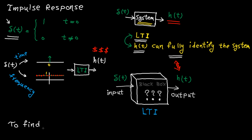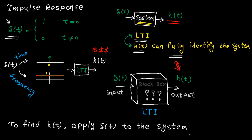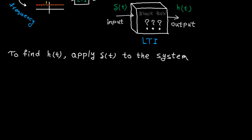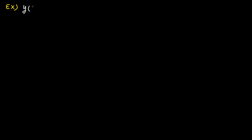Let's continue. To find H(T), all you need to do is apply the delta function to the system, or basically replace the input by the delta function. First example: this system is given and the question is what is the impulse response. This is our input. To find the impulse response, we just need to replace the input by the delta function. So here is our impulse response.